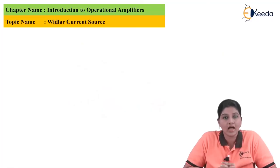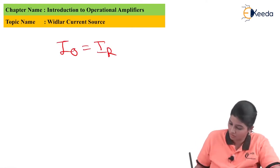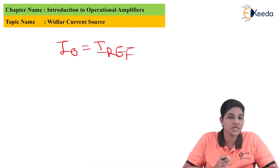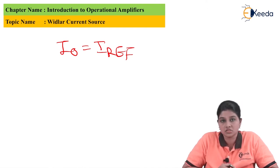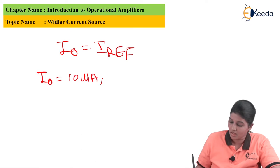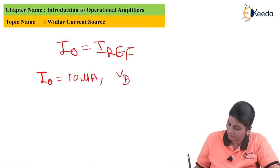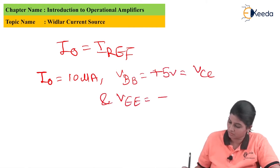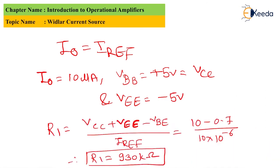We know that the current source circuit has a relationship that I_O is equal to I_reference — meaning the output current is approximately equal to the reference current. But when we consider the two-transistor circuit and if the required output current is, for example, 10 microampere, the value of R1 can be found to be 930 kilo ohms, which is a very large value. Such large resistors are difficult to fabricate on an integrated circuit because they require a larger area. Therefore, it is very important to limit the range of resistor values so they can be easily fabricated on the chip. This requirement is satisfied by using a circuit called the Widlar current source circuit.